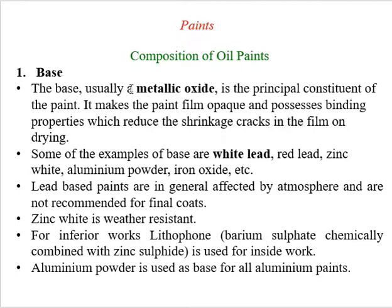Looking at the composition of oil paints, the first component is the base — a metallic oxide and the principal constituent of the paint. To manufacture a paint we require four to five basic ingredients. The base examples include white lead, red lead, zinc white, and aluminium powder. Zinc, for example, shows the property of weather resistance, while lithophone is used for inferior work.